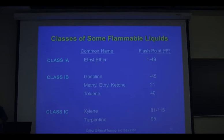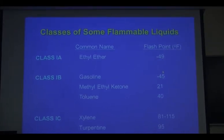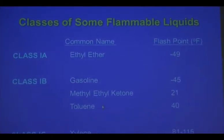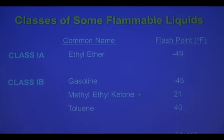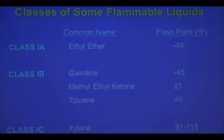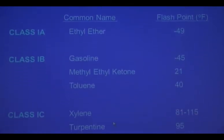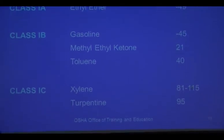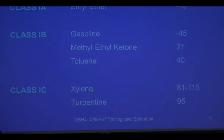Class 1A example: ether, with a flashpoint of negative 49 degrees Fahrenheit. Class 1B: gasoline, negative 45 degrees, plus a couple of others. Class 1C: turpentine, at 95 degrees — you've probably all used turpentine. So those are examples of Class 1A, 1B, and 1C.